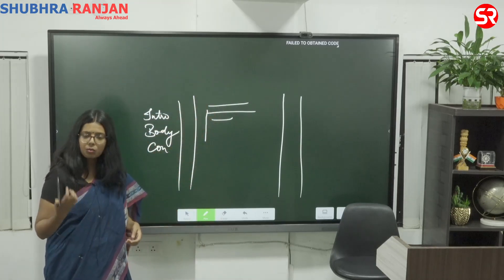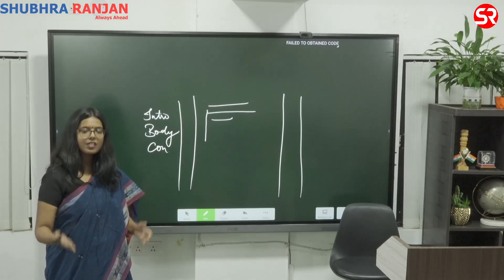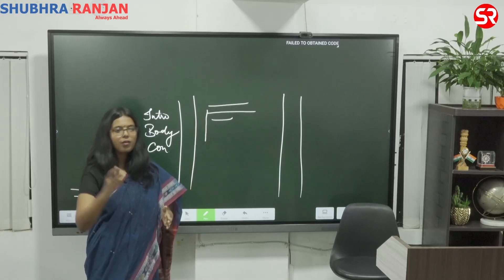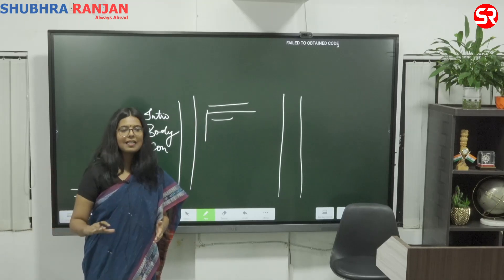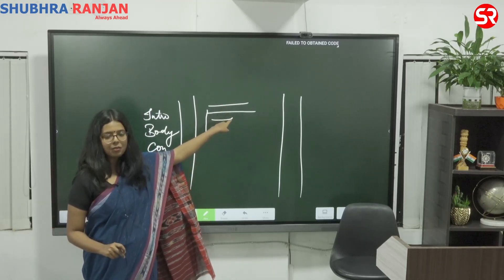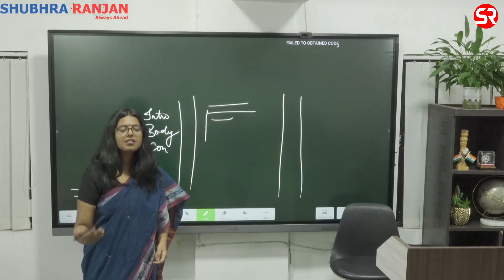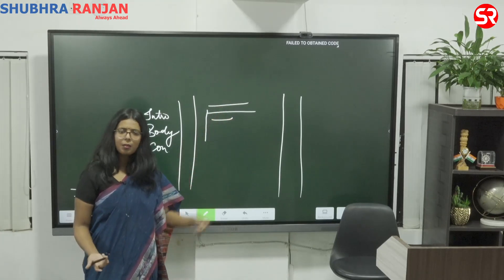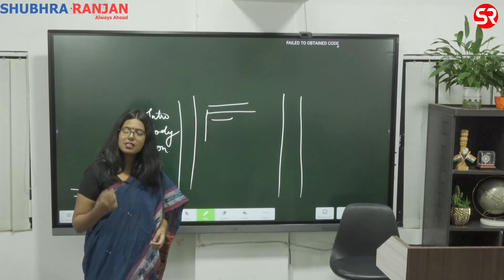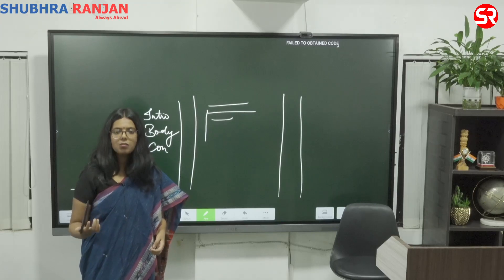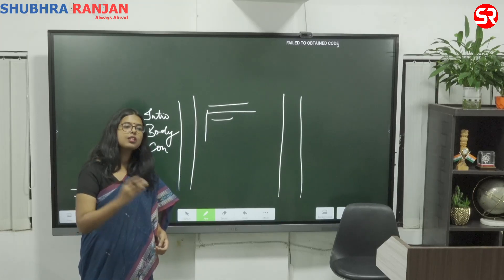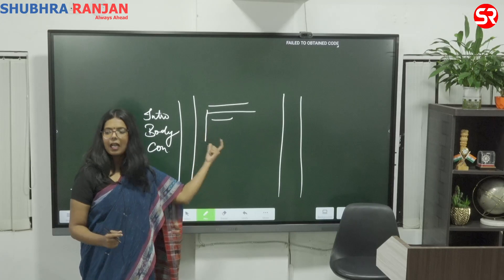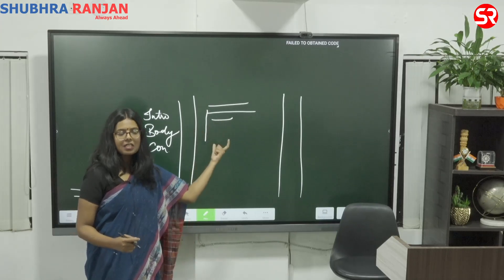When you are writing an introduction, you can include chronology, because dates are very important in history. When I say dates, you can broadly include centuries — you don't need to remember exact dates like 15th August or 11th November. You can include centuries like 17th century, 18th century, or 6th century BCE. Centuries are easier to remember and when writing in broader terms, there is hardly any scope for making a mistake.